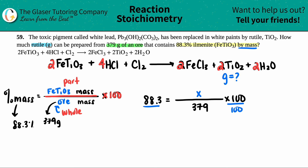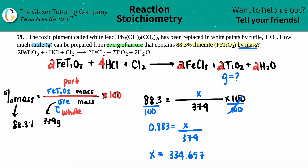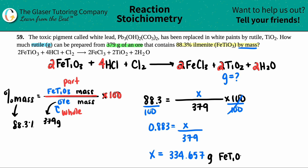Dividing by 100, I get 0.883 equals X over 379. Cross multiplying: 0.883 times 379 gives me 334.657. That's grams of the part — the ilmenite, which is FeTiO3. So I have a mass of 334.657 grams of FeTiO3.